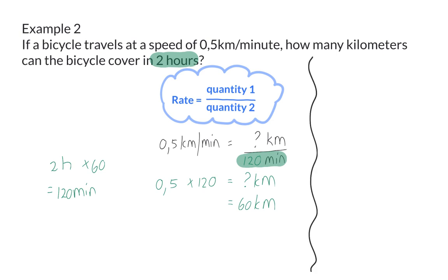You could also have chosen to rewrite this rate in terms of a ratio by saying you have 0.5 kilometers for every one minute. In the question, we were given 2 hours, and we've already converted that into minutes as 120 minutes.